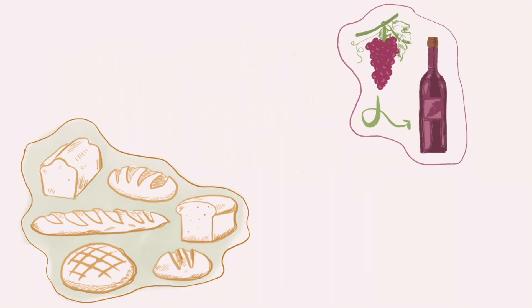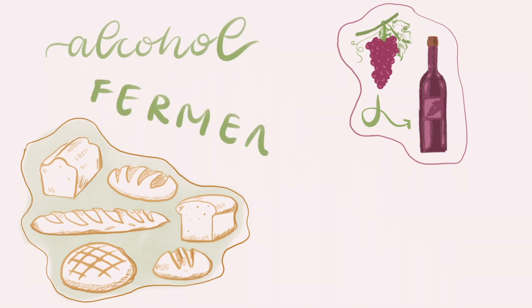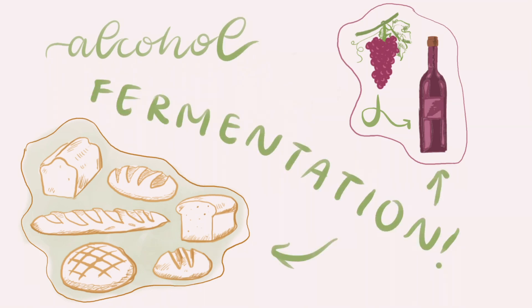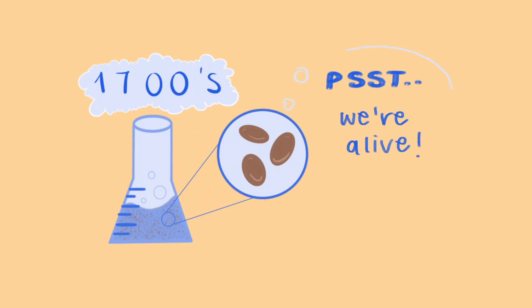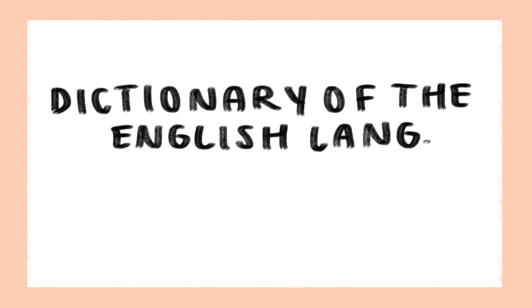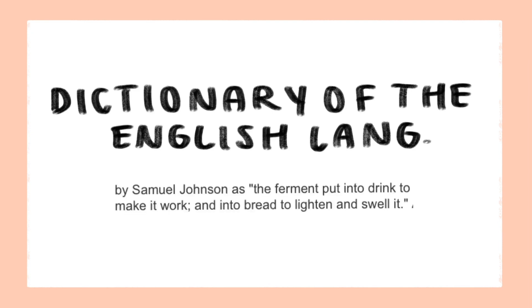Yeast play a very important role in cooking and baking, because they undergo a process called alcohol fermentation, a process that can also make wine from grapes. In the 1700s, people thought that yeast were just chemicals necessary for fermentation, not real organisms. In fact, the 1755 Dictionary of the English Language by Samuel Johnson called it "the ferment put into drink to make it work, and into bread to lighten and swell it."